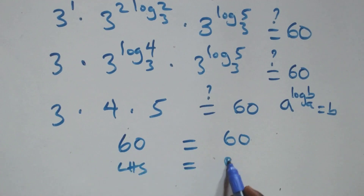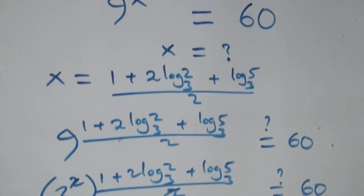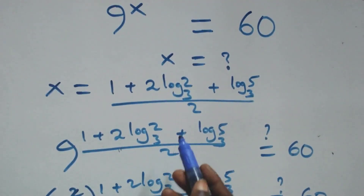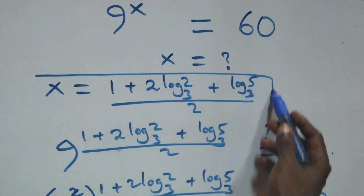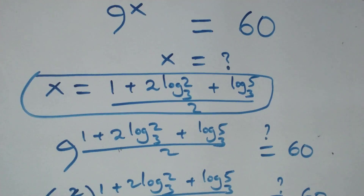Therefore we conclude that x equals (1 + 2·log₃2 + log₃5)/2 satisfies the given equation. Thank you for watching — don't forget to subscribe for more videos, turn on the notification bell, share this video, give a thumbs up, and put your comments. See you next time, bye for now!